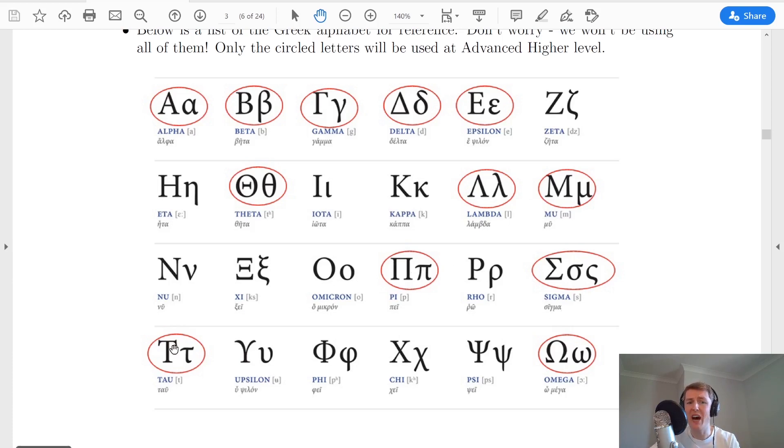and you've got tau, which remember we used in the higher course for the standard model, and then we've got omega, which was used for your unit of resistance.